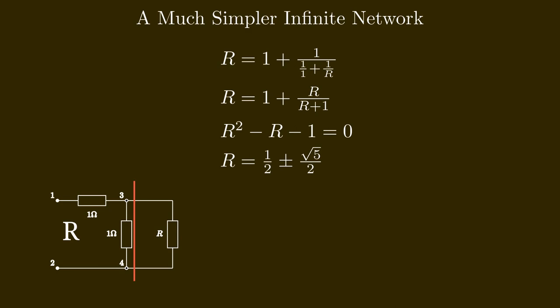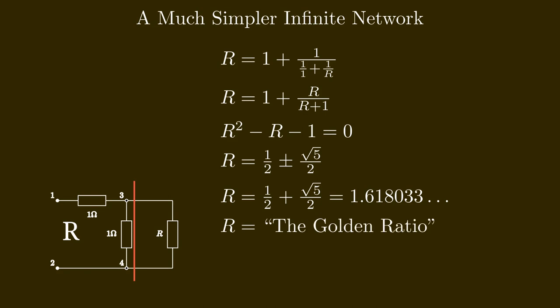This gives us the quadratic equation R squared minus R minus 1 equals zero. This equation has two solutions: R equals one half plus or minus the square root of five divided by two. Since one solution is negative, we take only the positive solution: R equals one half plus square root of five divided by two, which is approximately 1.618033 — also known as the golden ratio. Note that our resistance is not a rational number. While normally connecting resistors gives rational multiples of the original values, connecting infinitely many gives us a square root.